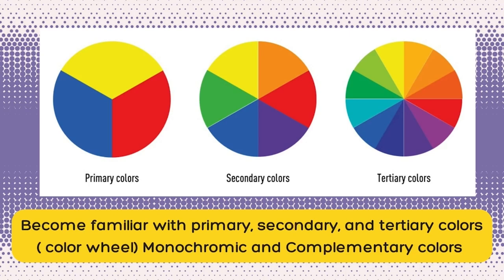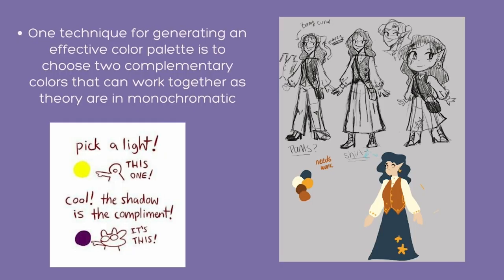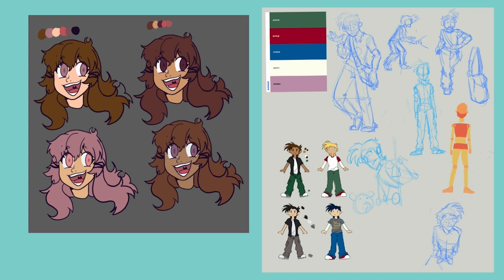You can even make monochromatic or complementary color palettes for your character. One technique to generate an effective color palette is choosing two complementary colors that can work together with a monochromatic color. I used complementary colors like purple and yellow for my shadows and lighting, or navy blue and an orange-yellow color for my shadows and lighting. As you can see, I have studied what I wanted for this character's color palette. I wanted the skirt to have shades of pink and purple, so I played with what colors would go great. On the right, I played with what the character would be wearing. Given these characters are from a 2000s show, the outfit reflects that.